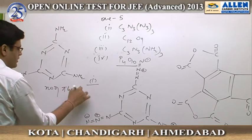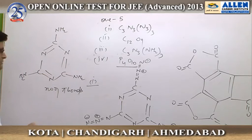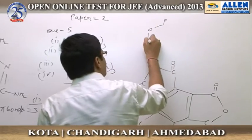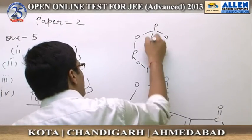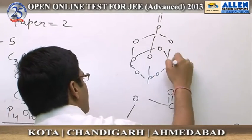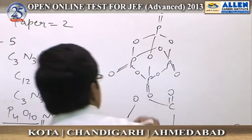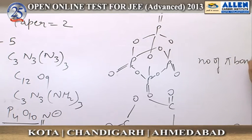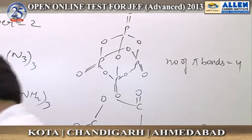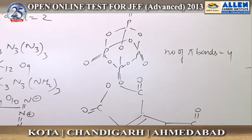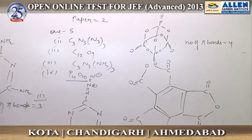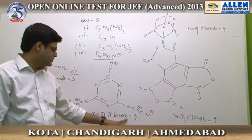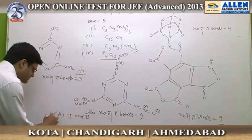For the fourth option, the number of pi bonds are 1, 2, 3, and 4. Which of the following group of molecules has the same number of pi bonds? Option A is 1st and 2nd — the number of pi bonds in the first option is 9, and in the second option is also 9. So the answer is A.